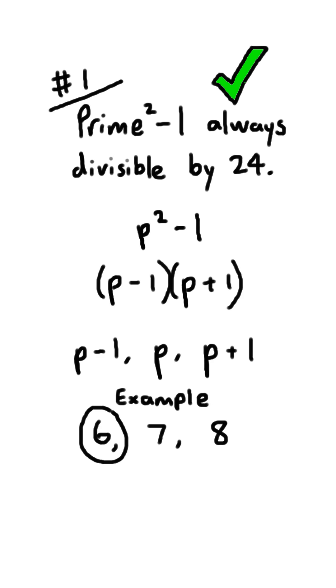And that number can't be p since p is prime, so it's got to be one of the other two, meaning that the product of the other two is also divisible by 3.